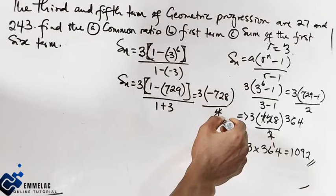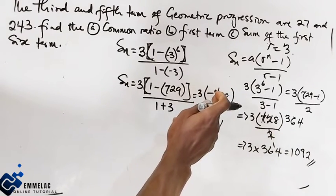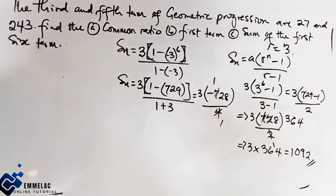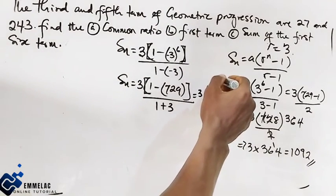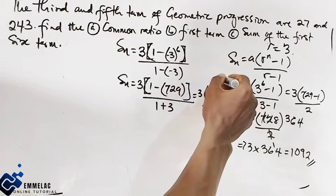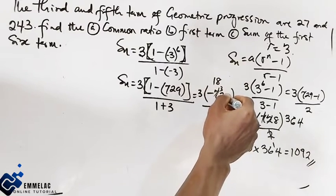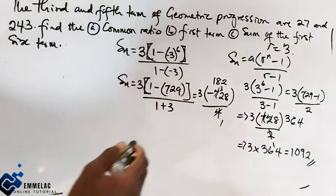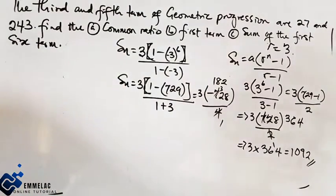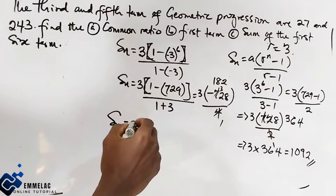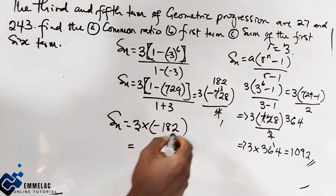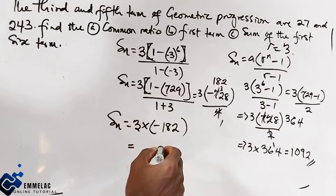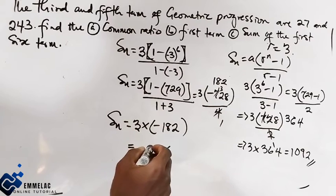Now (negative 3)^6 equals 729. So S_6 equals 3 times (1 minus 729) over 4, which is 3 times (negative 728) over 4. Dividing 728 by 4 gives 182. So S_6 equals 3 times negative 182, which gives negative 546.